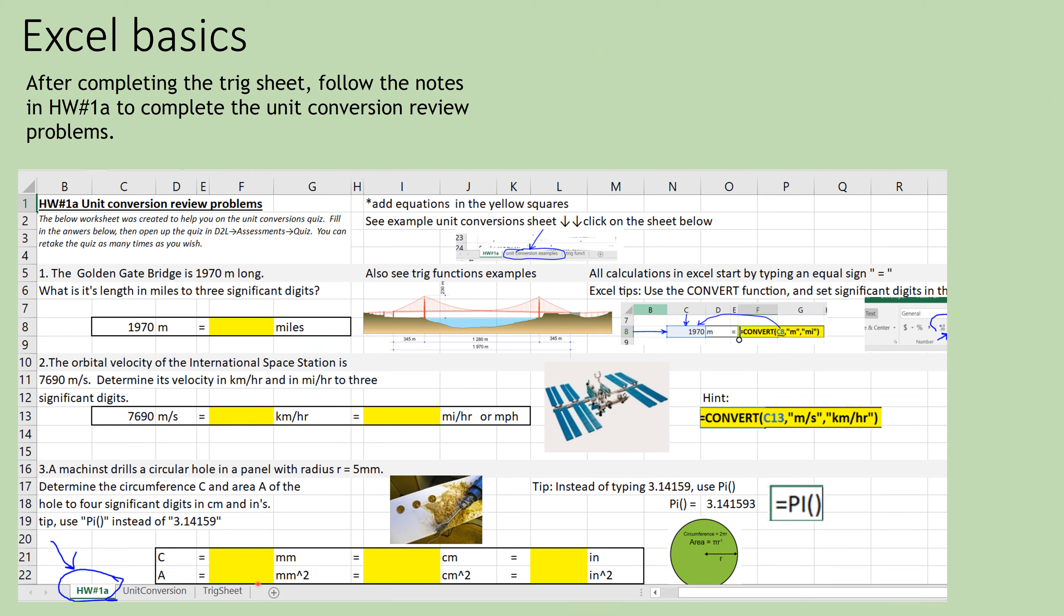Once you've finished filling out everything down here in the trig sheet, go ahead and look at the unit conversion sheet. That worksheet's already done for you. And then come over here to homework number 1A. And this has the same problems that are in one of the first D2L quizzes. So you'll be able to answer the problems here and then try out a D2L quiz with your answer.